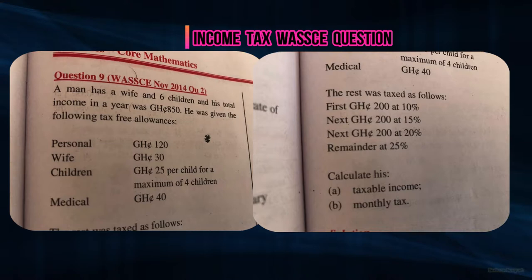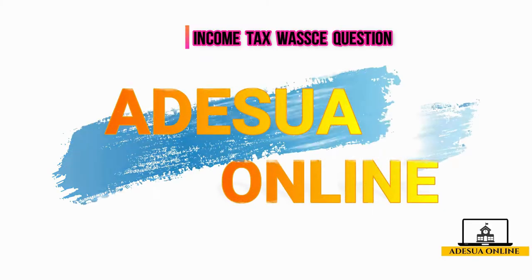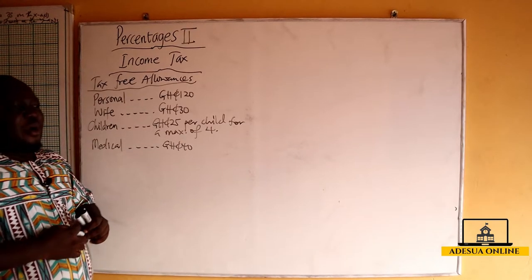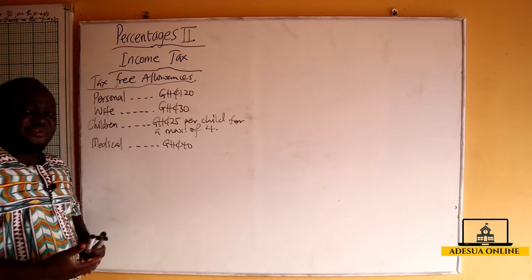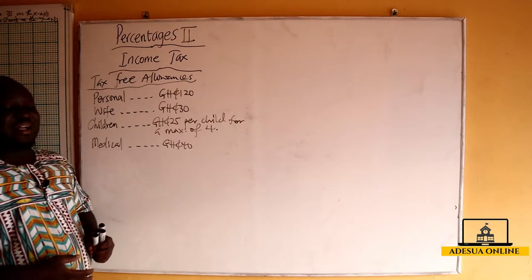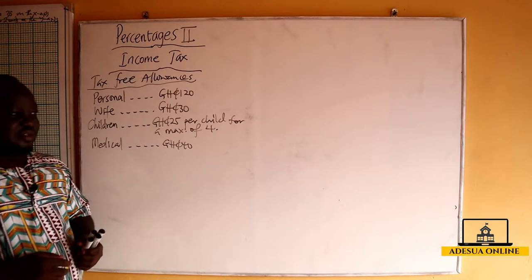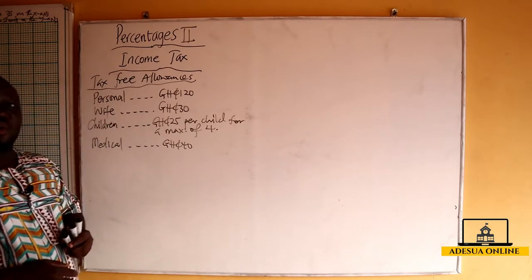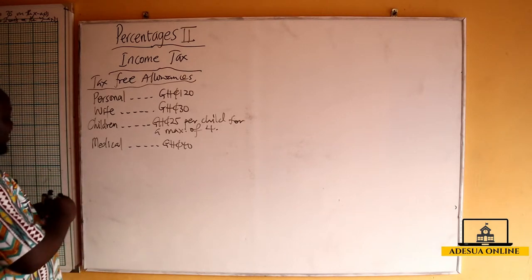In this question, we are told the man has a wife and six children, and he was given the following tax-free allowances — some medical bills, personal, and so on. Let me list them down. Upon the information given, the man has a wife and six children, and we are going to calculate his tax-free allowances.